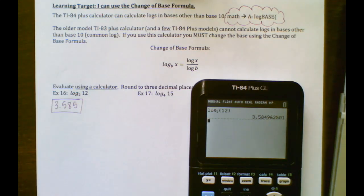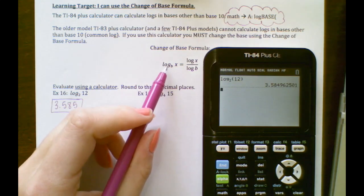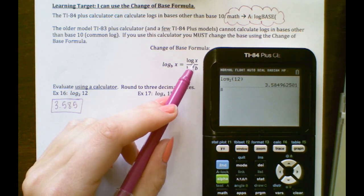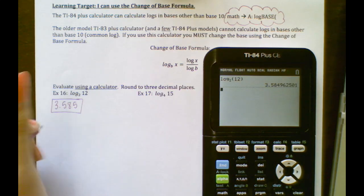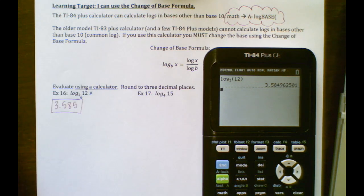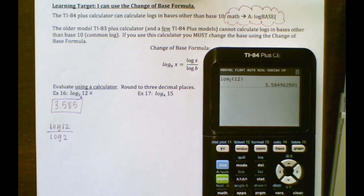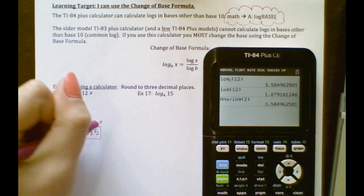If you don't have that feature in your calculator, use the change of base formula. If you have log base b of x, it equals log of x divided by log of b, because your calculator can calculate common logs — both have base 10. For our example: the b value is 2 and the x value is 12, so this would be log 12 over log 2. Type in log 12 divided by log 2, which gives the same exact answer: 3.585.